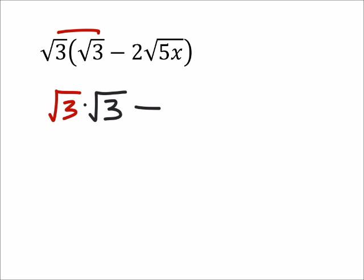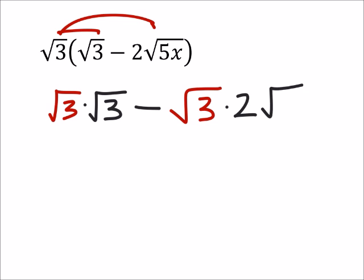We're going to minus, distributing the square root of 3 again, square root of 3 times 2 times the square root of 5x. But I can rearrange this so that I got 2 times the square root of 3 times the square root of 5x.